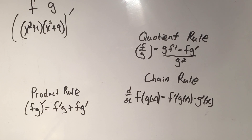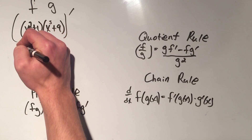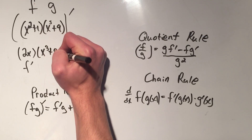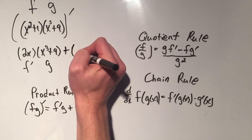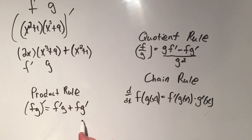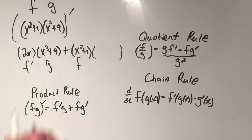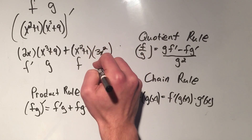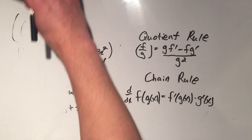I take the derivative of f. Now that you know the power rule and the constant rule, the derivative of x squared is 2x, and the derivative of 1 is 0. So this is f prime, then I times g — I just copy the g function. Then it's plus: I copy f, the first one, and then I take the derivative of g. The derivative of x cubed is 3x squared, the derivative of 9 is 0. There's your g prime, and there's the derivative of that product using the product rule.